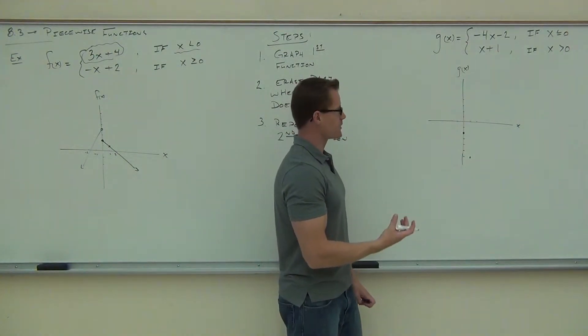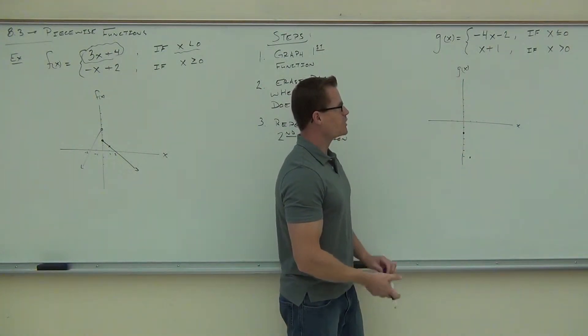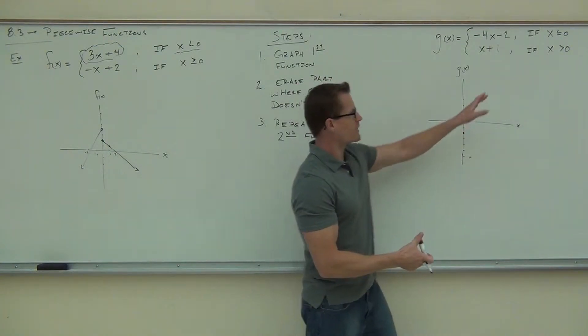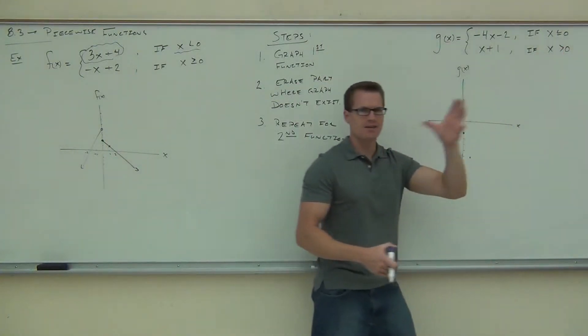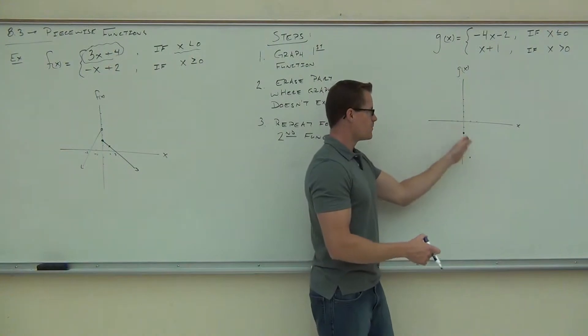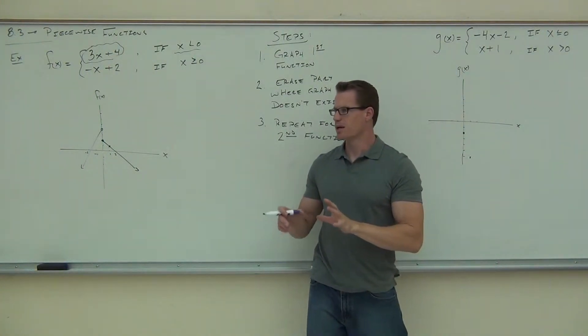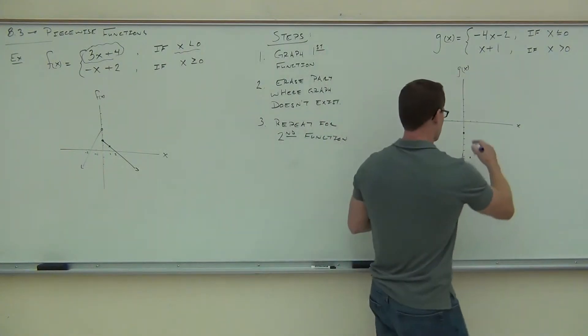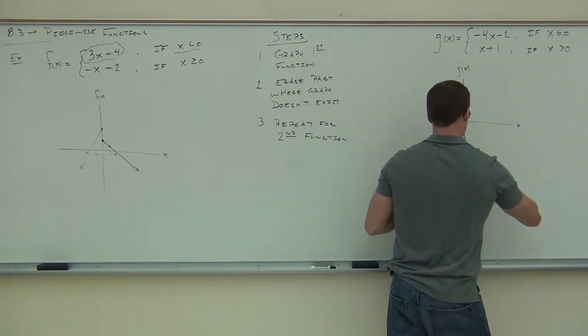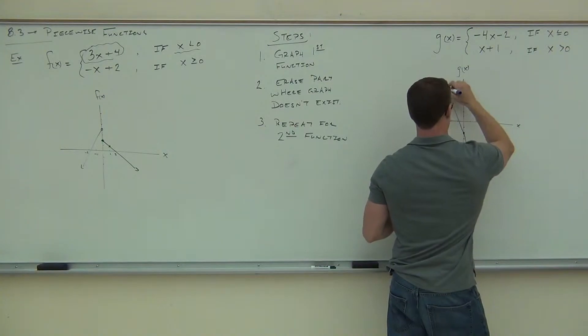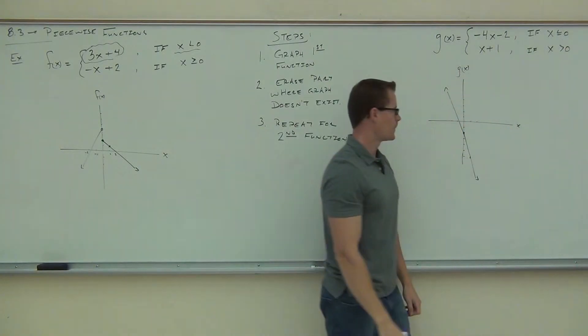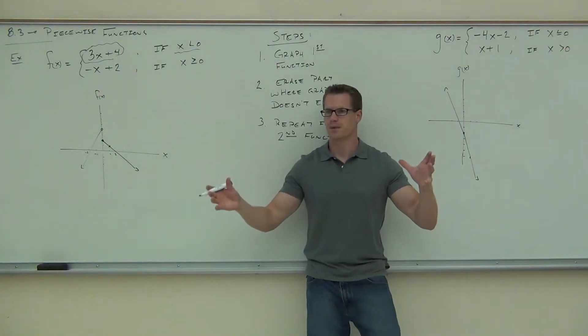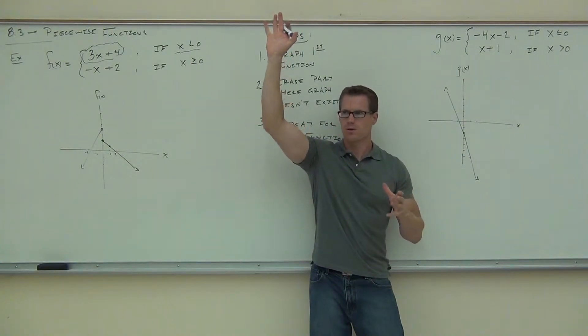And now if you're thinking about this, you're going to go, wait a second. I know my negative, I know x is supposed to be less than 0. My negatives are what I'm looking for in this case, but my point's off to the right. That's okay. Remember, you're going to be erasing half your line, right? So use that to draw your line.